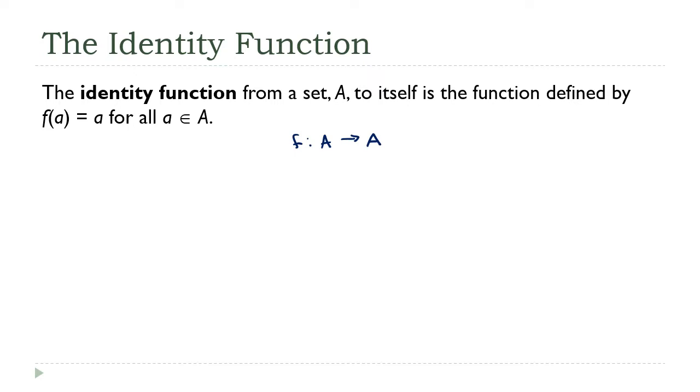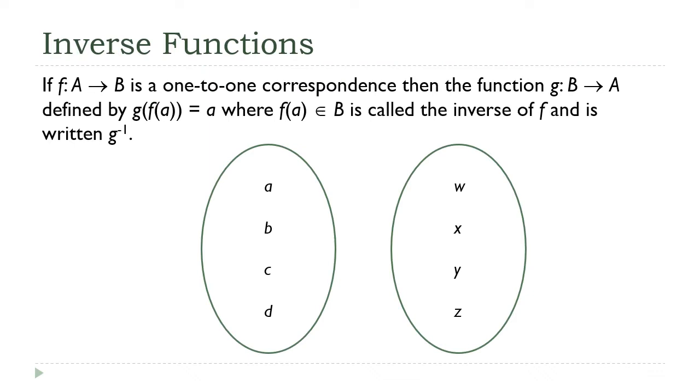Hopefully you can convince yourself pretty quickly that this function is both one-to-one and onto. If we pick any a from the second set, well it's the same a from the first set that gets mapped to it. And the only way two points can have the same y value is if they are the same values from the domain.